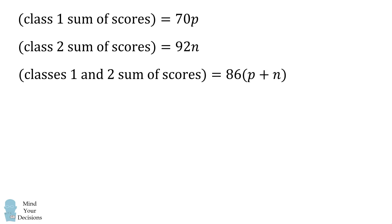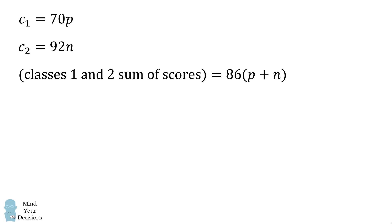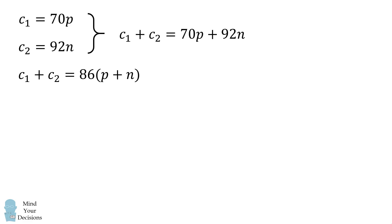So what can we do with these three equations? Let's first write C1 for class 1, C2 for class 2, and then the third equation becomes C1 plus C2. We don't directly see how we can get to P divided by n, so let's experiment with these equations. If you look at the first two equations, we can add them together to get C1 plus C2 is equal to 70P plus 92n.